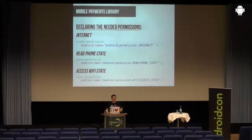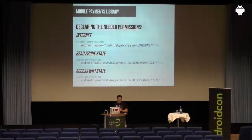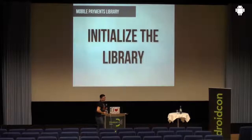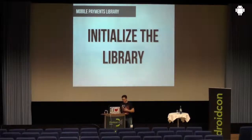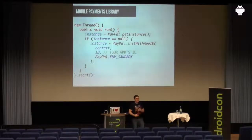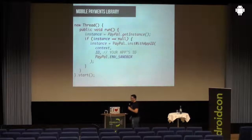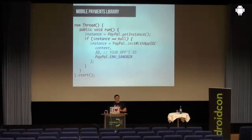Then declare the needed permissions — there are three. Internet is quite obvious. I need to know if you're connected, so I need Wi-Fi state as well. Phone state is needed to get the phone number, because with the SDK you can say once I've logged in, I can take my phone number and assign a PIN to do a faster checkout next time.